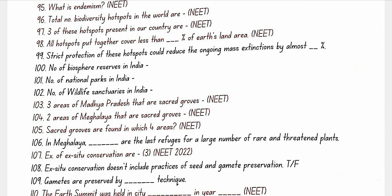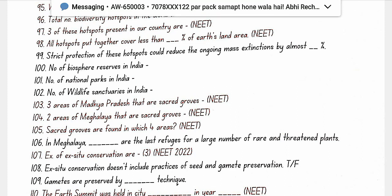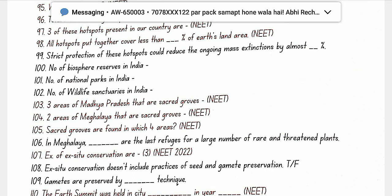All hotspots together cover less than 2% of Earth's land area; strict protection could reduce the ongoing mass extinction by almost 30%. India has 14 biosphere reserves, 90 national parks, and 448 wildlife sanctuaries. Sacred groves are found in: Khasia and Jaintia Hills of Meghalaya, Aravalli Hills of Rajasthan, Western Ghats of Karnataka and Maharashtra, and Sarguja, Chanda, and Bastar of Madhya Pradesh.